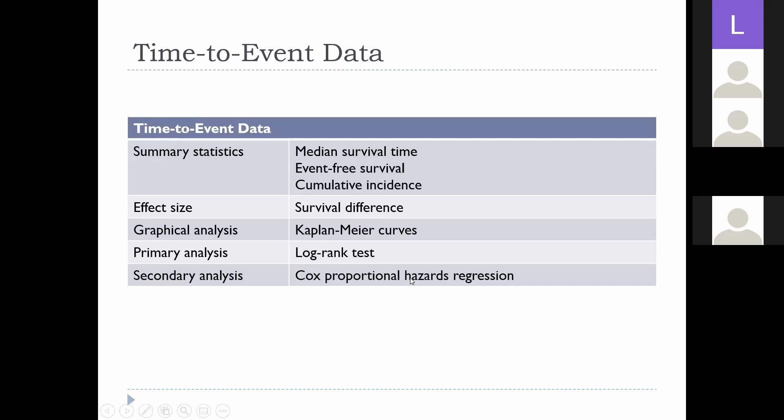For time-to-event data: we will summarize outcomes using median survival time, the five-year event-free survival plus or minus standard error, or cumulative incidence. We will describe the effect size as the survival difference between group A and group B. We will portray results graphically using Kaplan-Meier curves. We will test for the significance of the survival difference using the log rank test, and we will adjust for multivariable confounders using Cox proportional hazards regression.